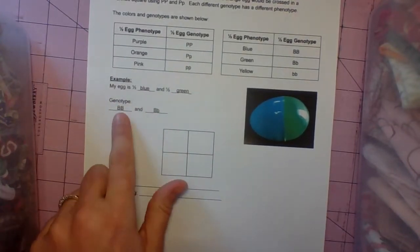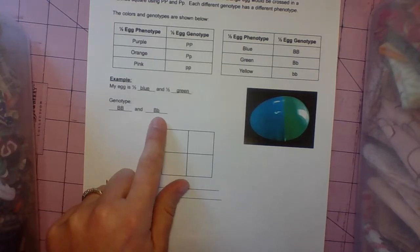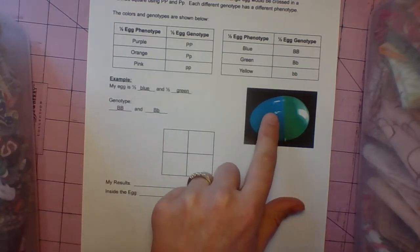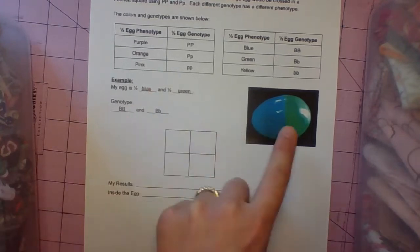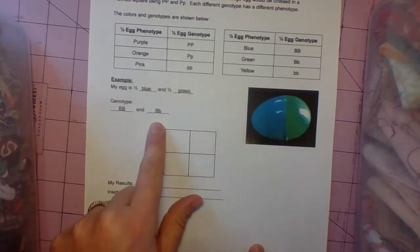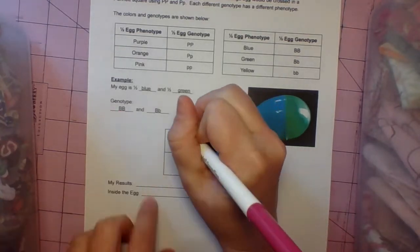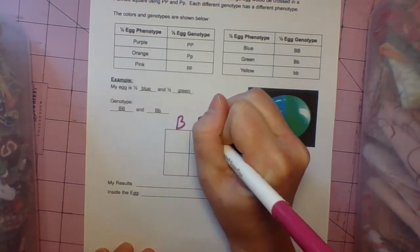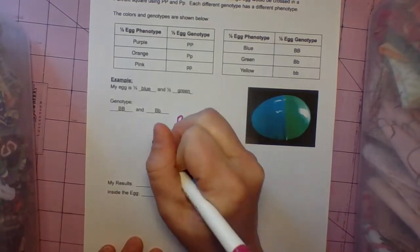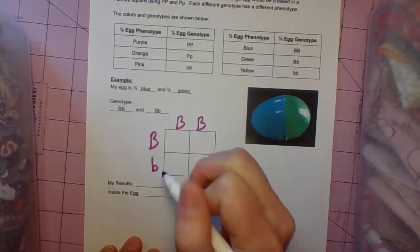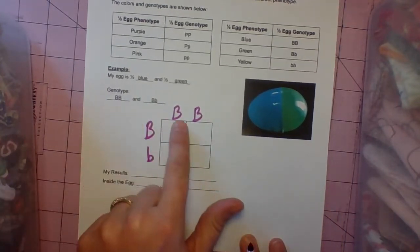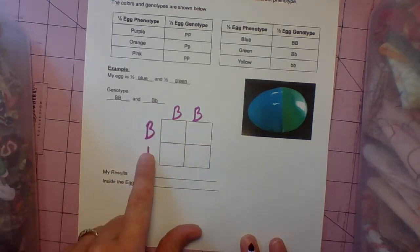We're crossing big B and big B and big little b, that heterozygous genotype, because our example half is blue and half is green. I like to write the first genotype on top of the Punnett square and the second one on the side. One letter per box.